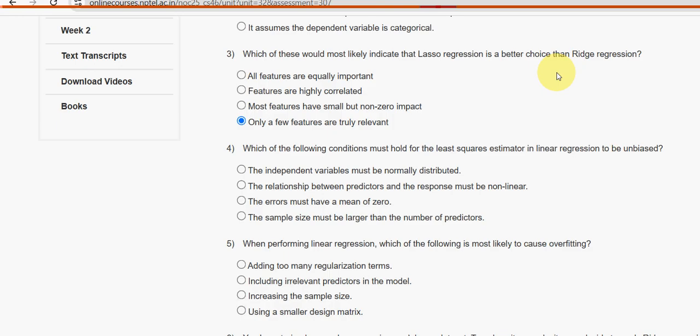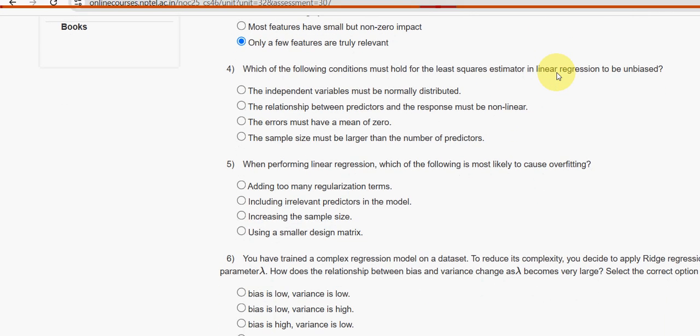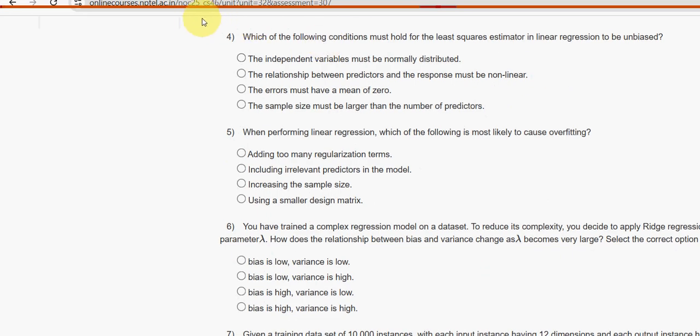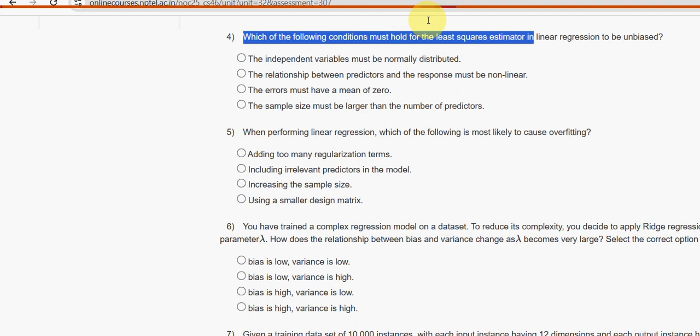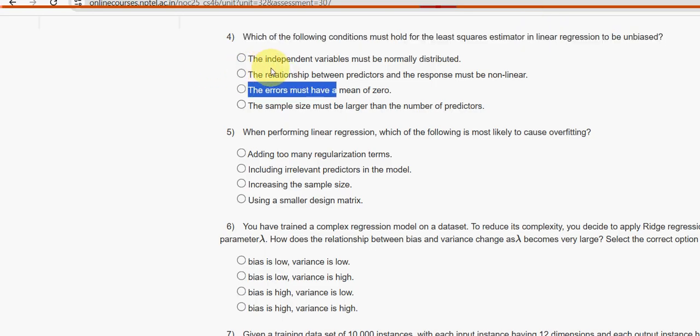Next, the fourth question. Which of the following conditions must hold for the least squares estimator in linear regression to be unbiased? For the fourth question, once again, the errors must have a mean of zero. Third option.